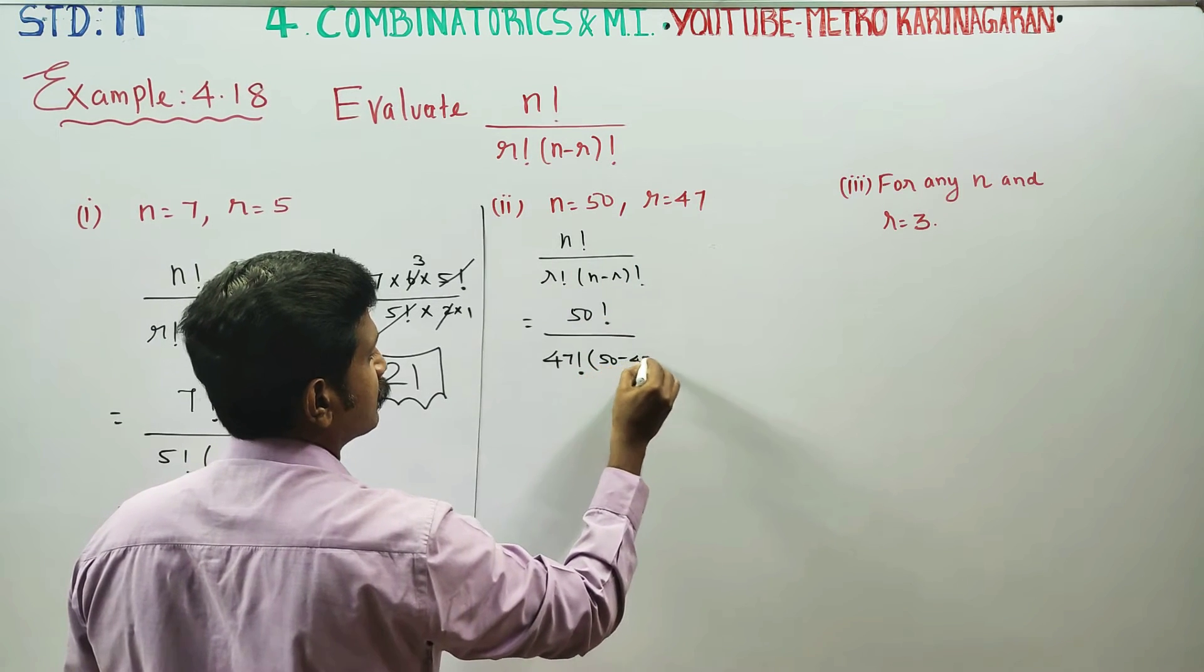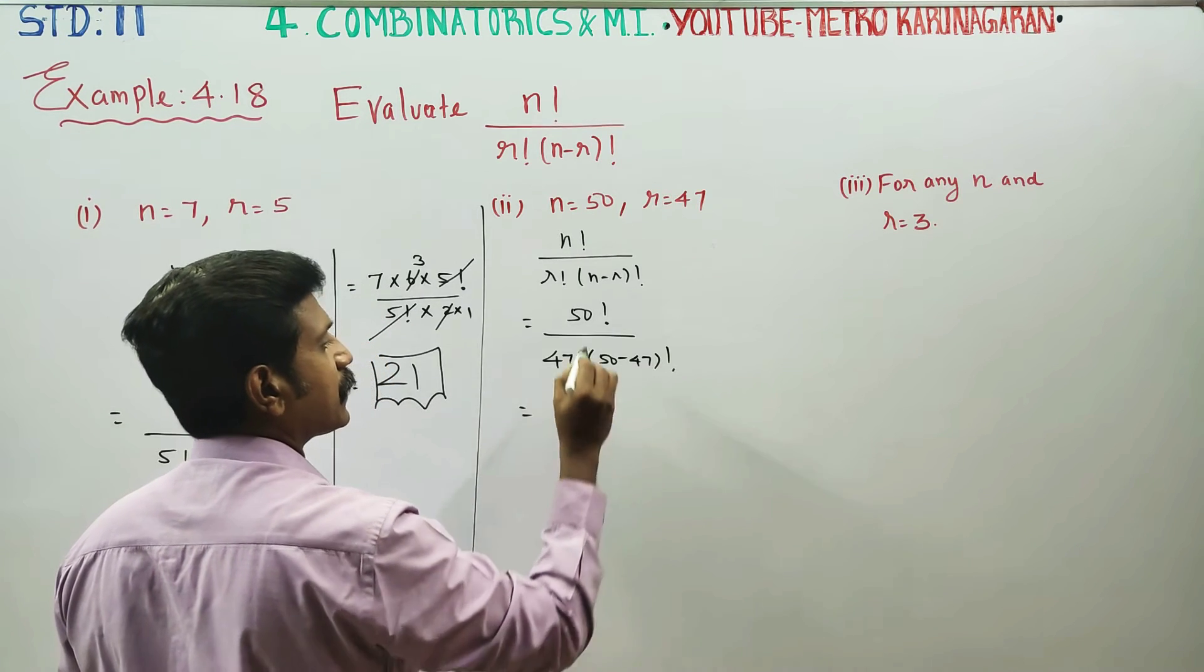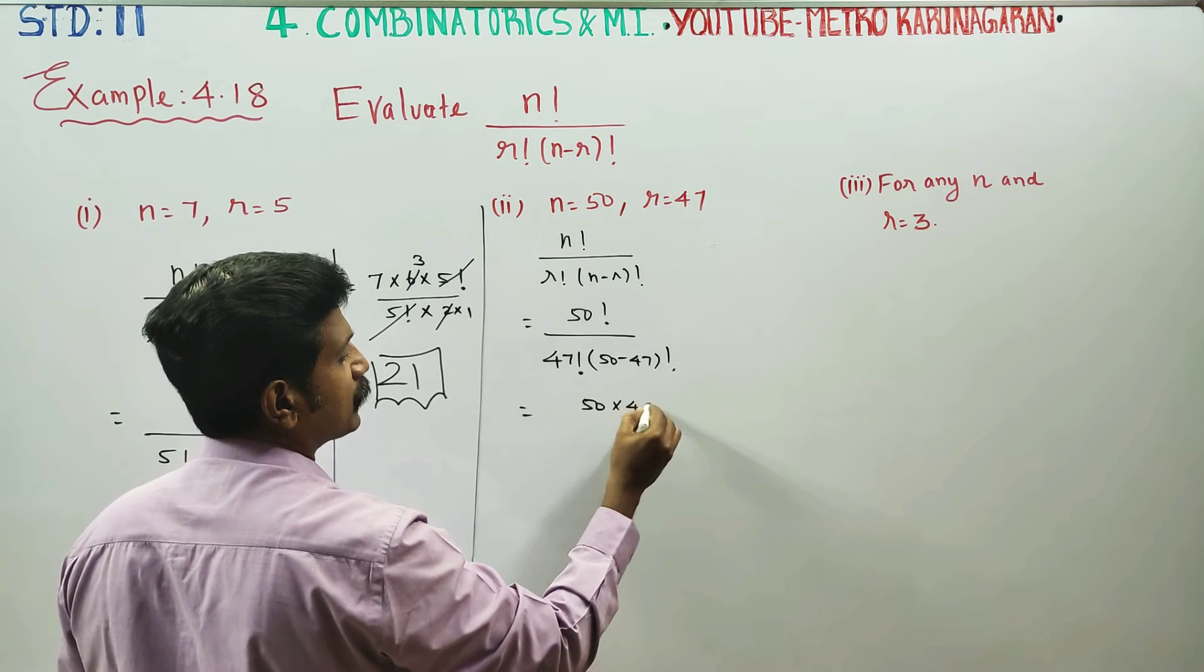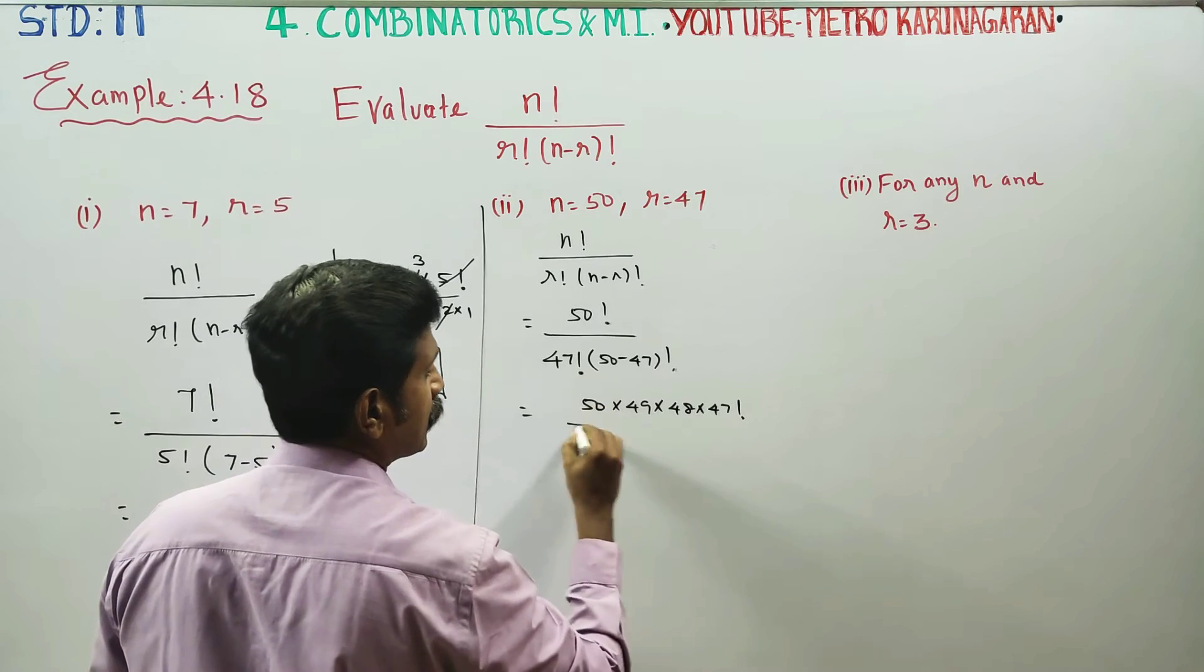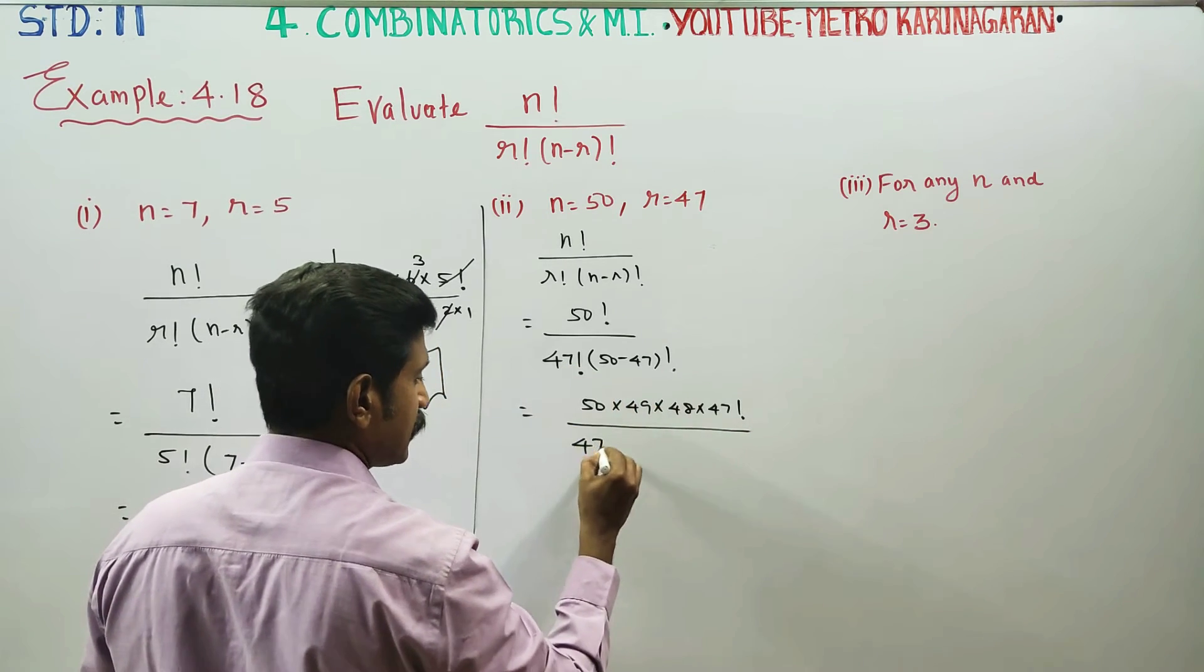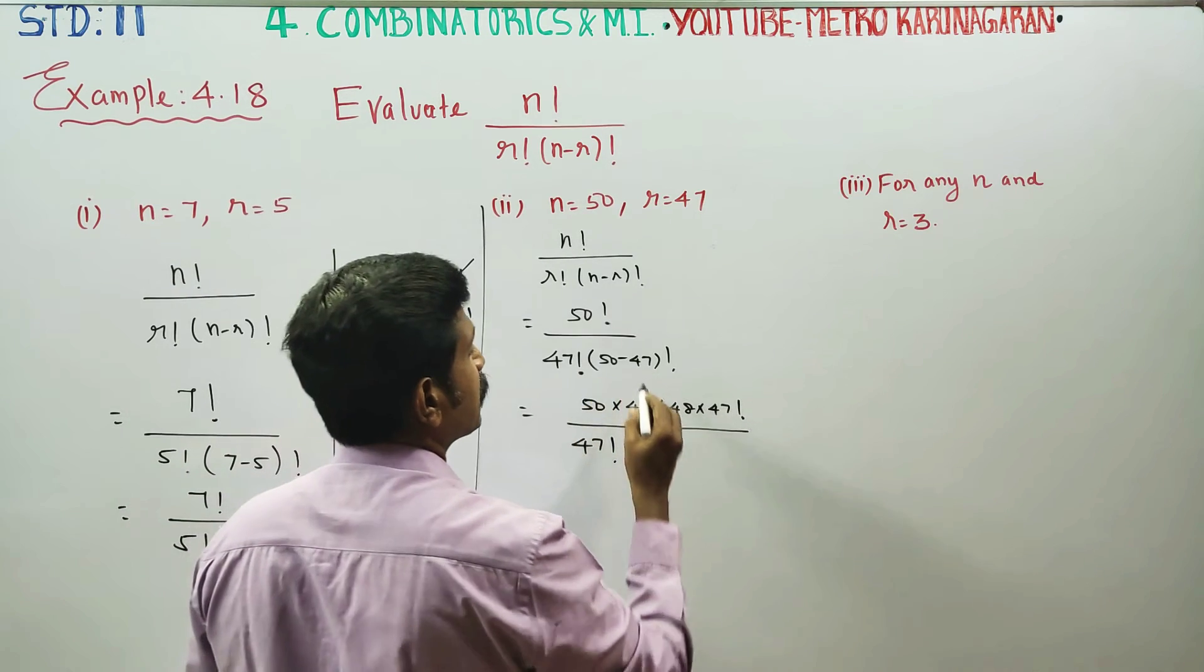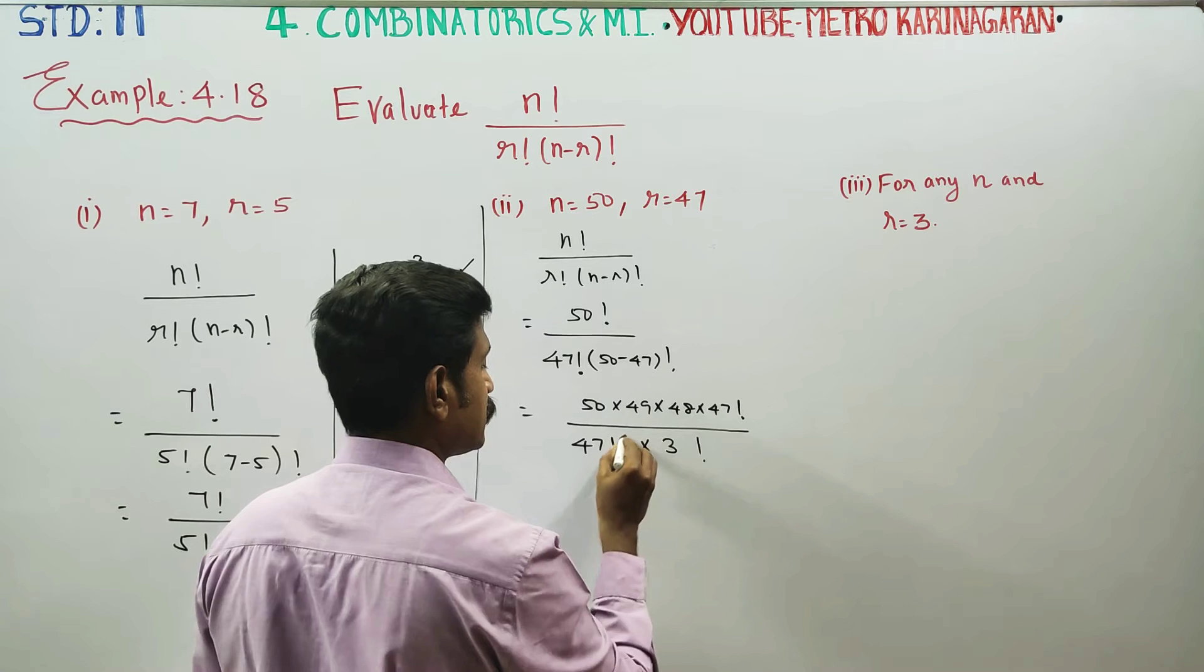50 factorial, n is equal to 47 factorial. Then when I stop and open, the denominator is 47 factorial. 47 factorial cancel, it is easier to be. 50 minus 47 is 3 factorial. This is to cancel.